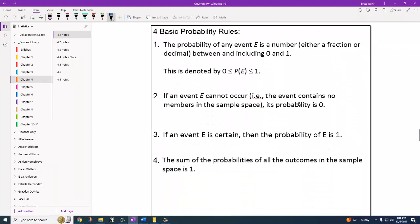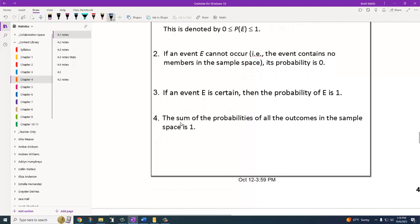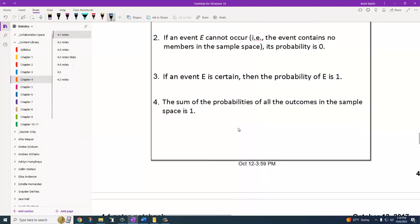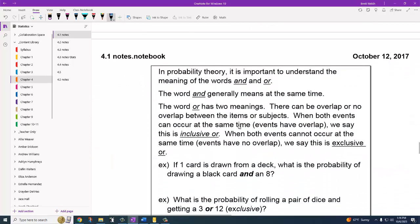Probability rules, a couple things. Probability will always be something between 0 and 1, inclusive. If something cannot occur, its probability is 0. If it's certain to occur, its probability is 1. And the sum of all the probabilities of possible outcomes is equal to 1 for a specific sample.